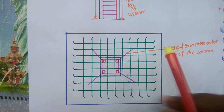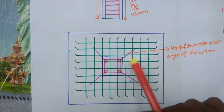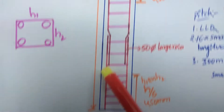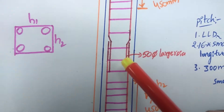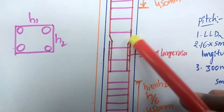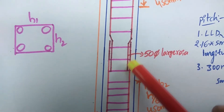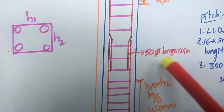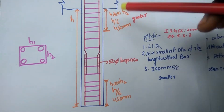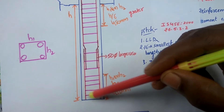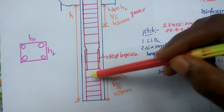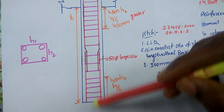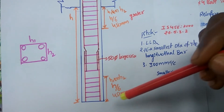These are the column bars with their extensions. The wrapping length of the extension rods is 50 times the diameter. There is ties with less spacing at the ends and middle spacing at the mid-zone.